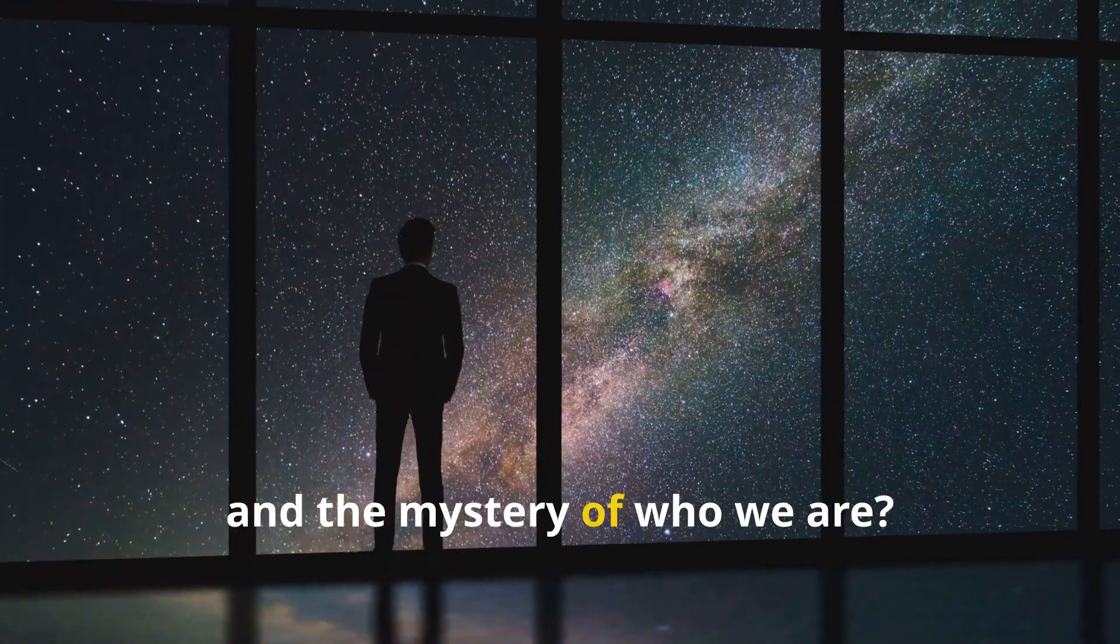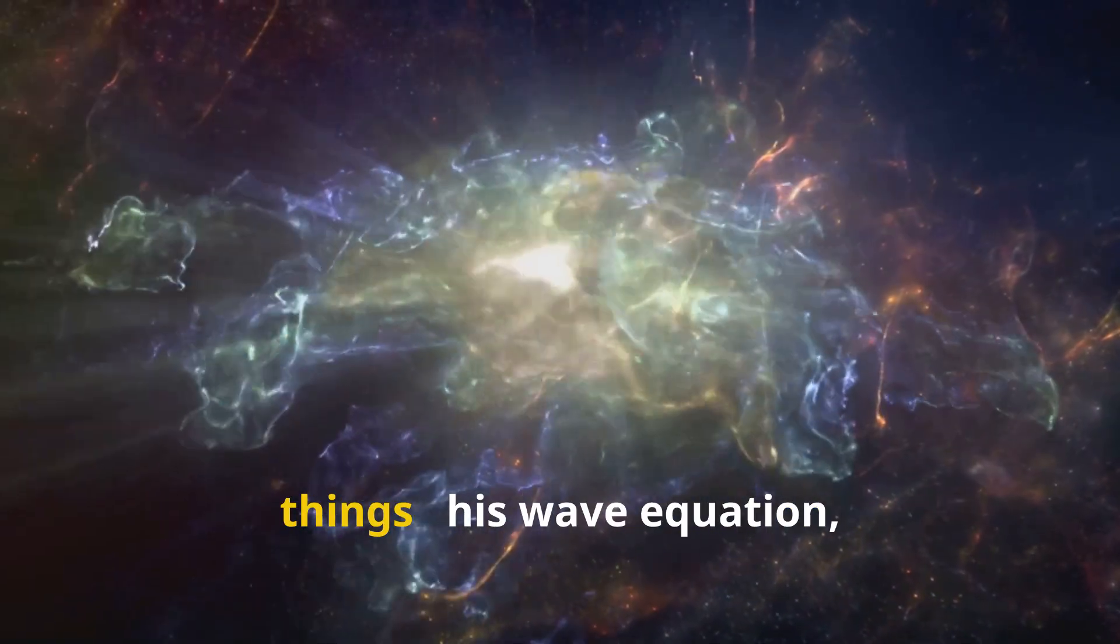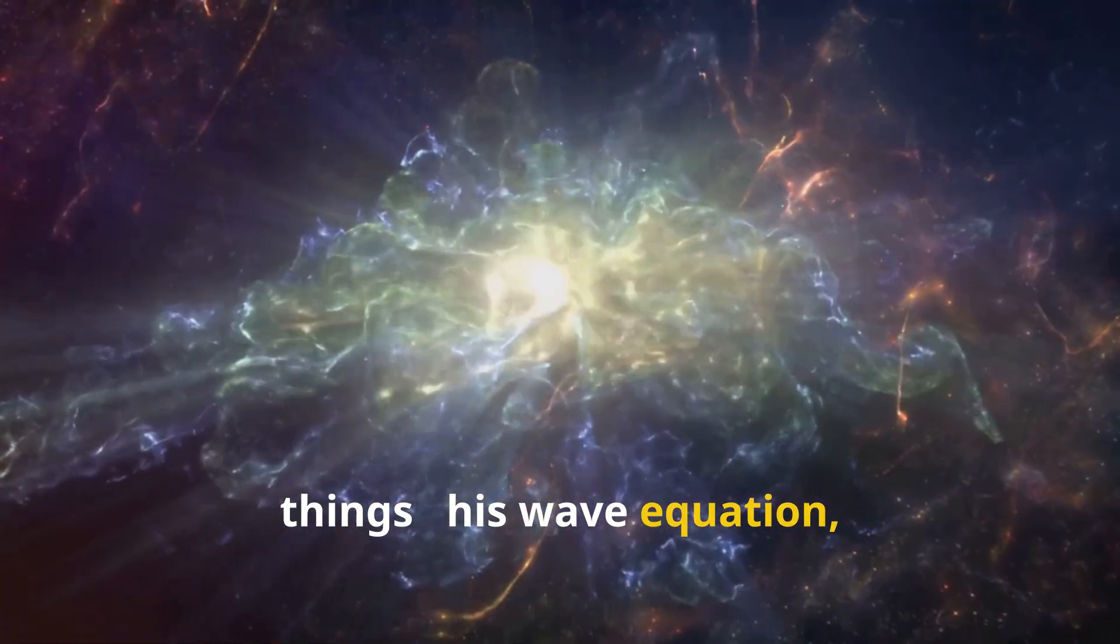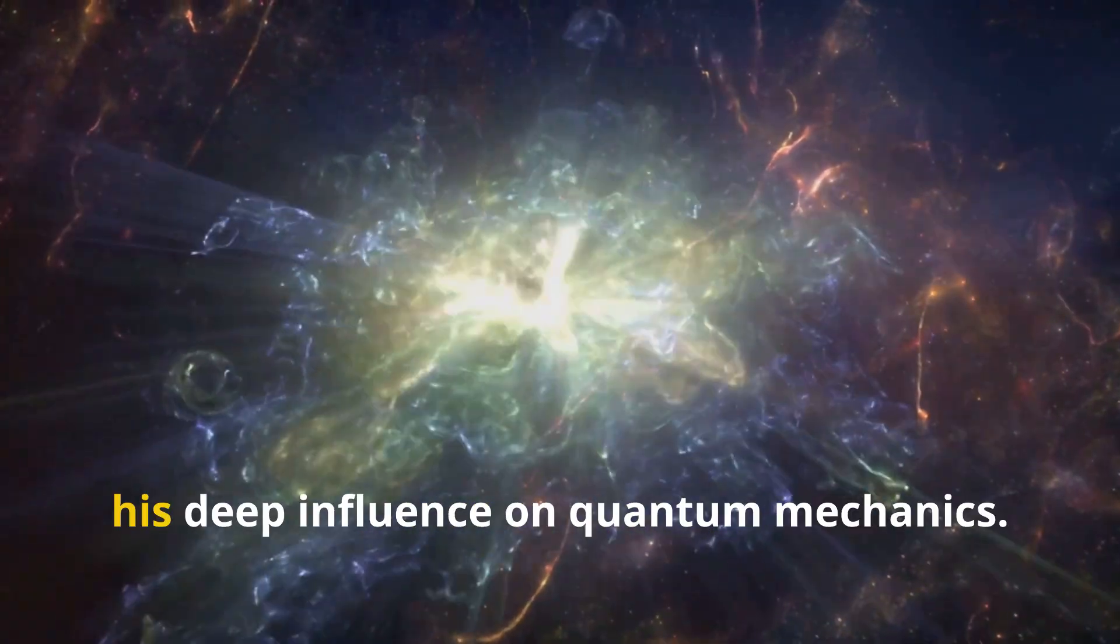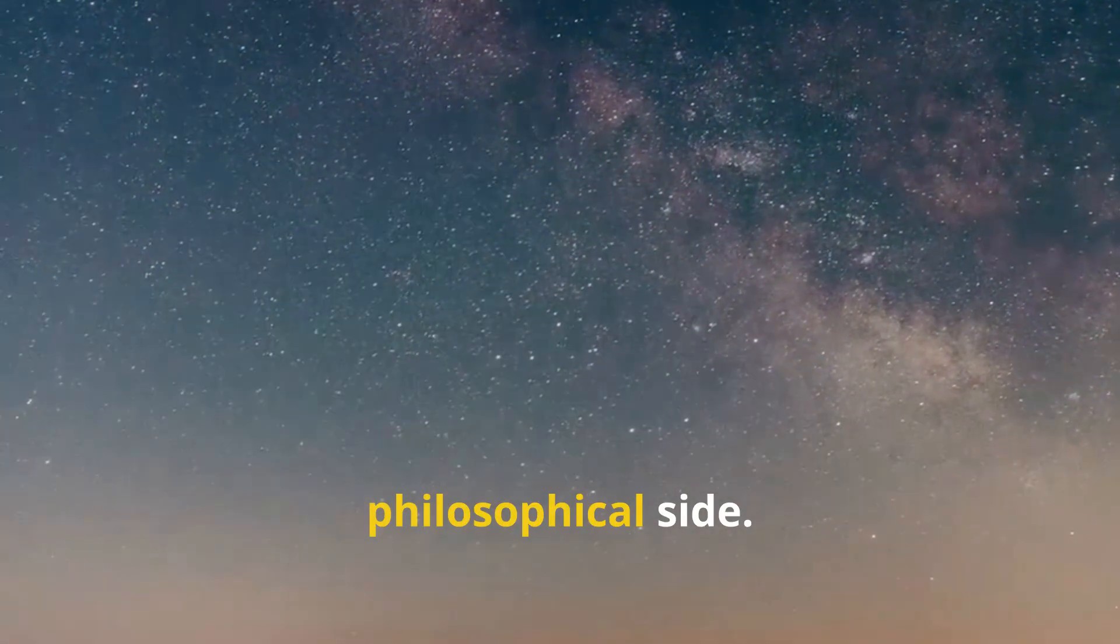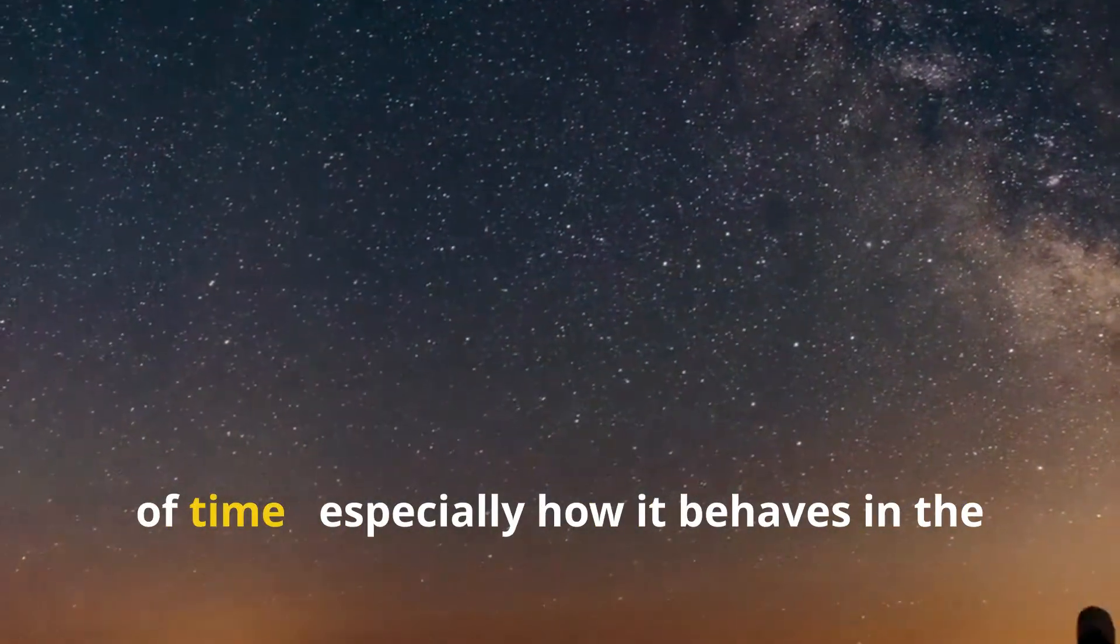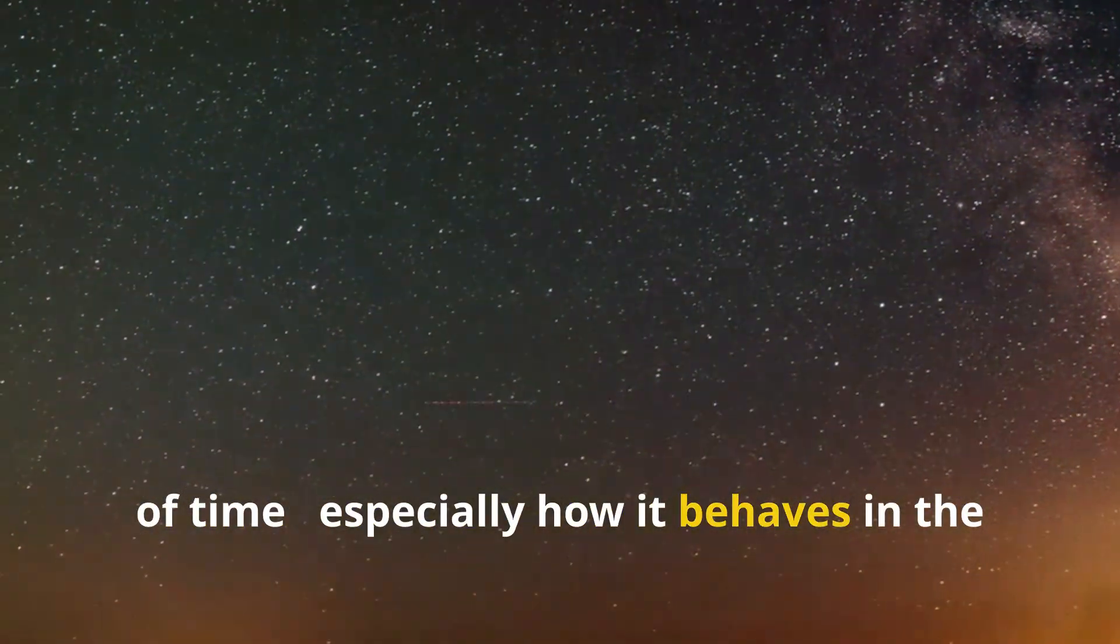Erwin Schrödinger is famous for many things: his wave equation, his paradoxical cat, his deep influence on quantum mechanics. But what's less known is his profound philosophical side. Schrödinger was fascinated by the nature of time, especially how it behaves in the quantum world.